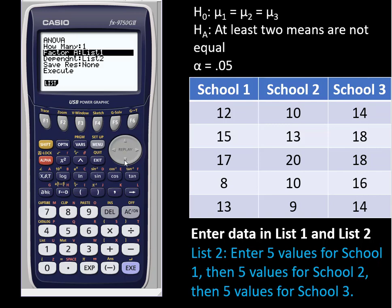Factor A is the sample numbers, samples 1, 2, and 3. That needs to be list 1 for me because that's where I entered the data. If you need to change that, press the F1 button and then enter the list number where it is.